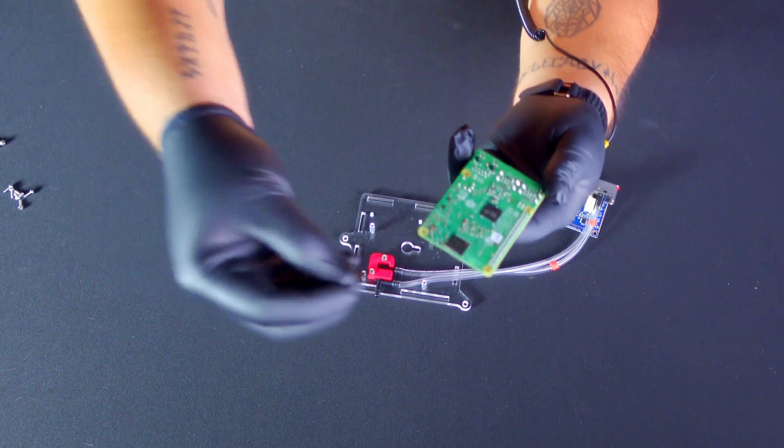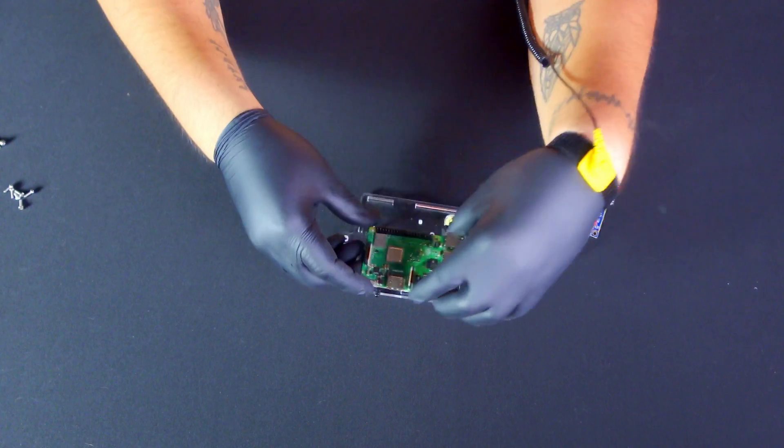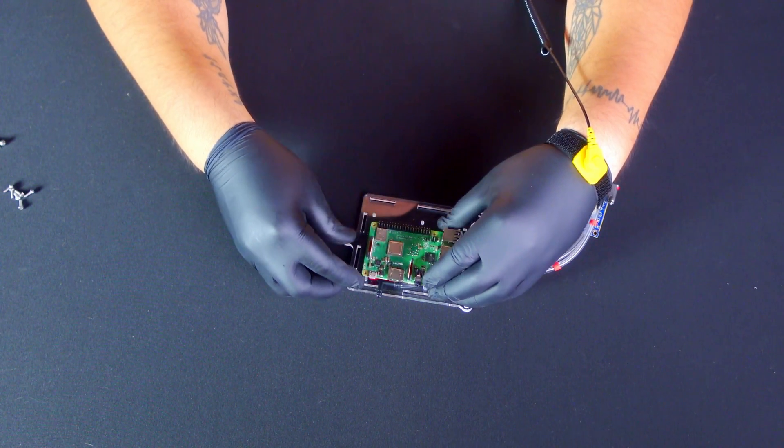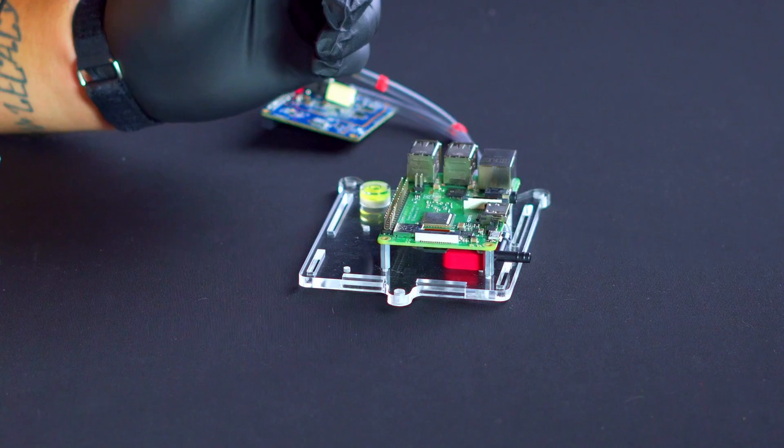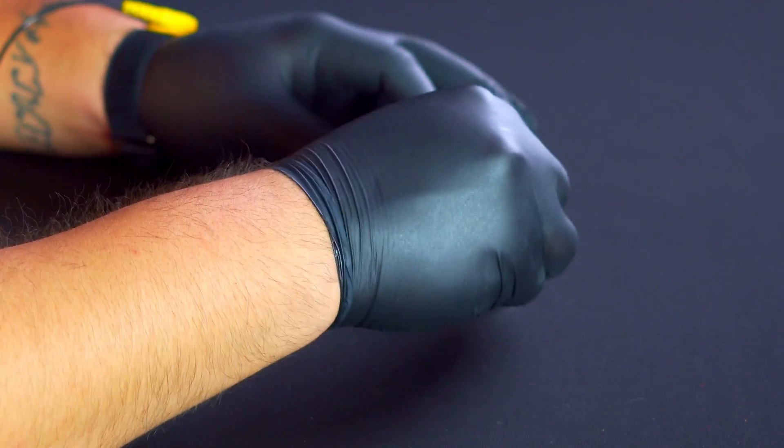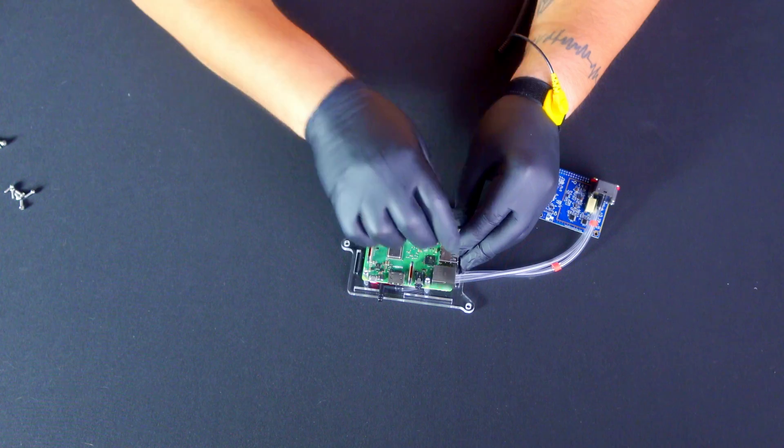Now, take your Raspberry Pi board and insert the provided micro SD card into the designated slot, ensuring the card's connections face downwards and the writing on the card faces outwards. Place the Raspberry Pi board onto the four standoffs and secure it in place with four additional metal standoffs.